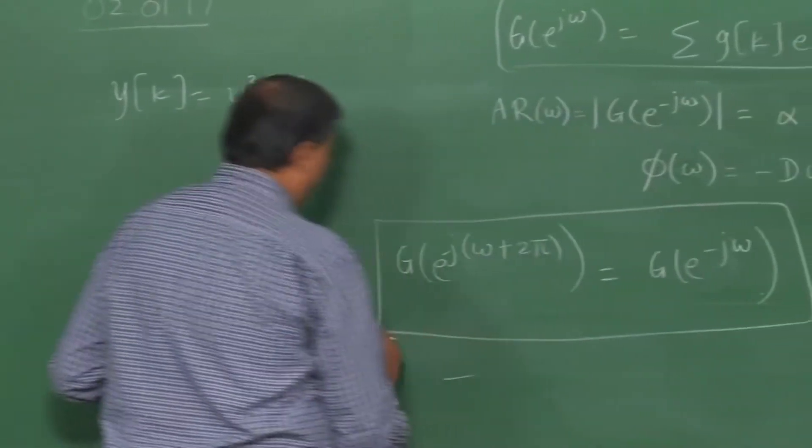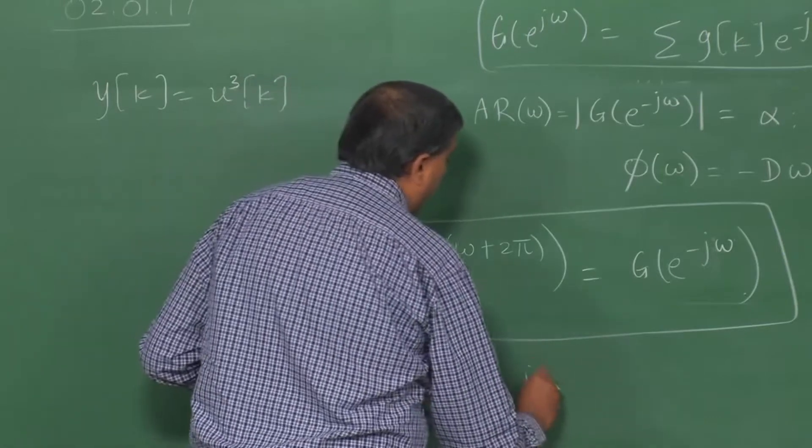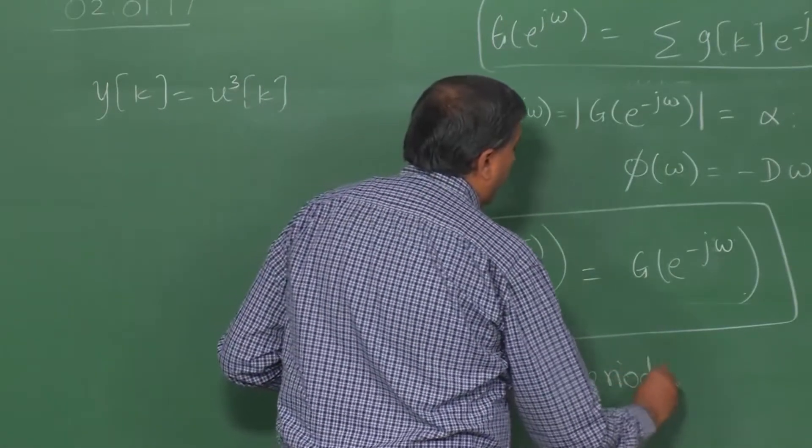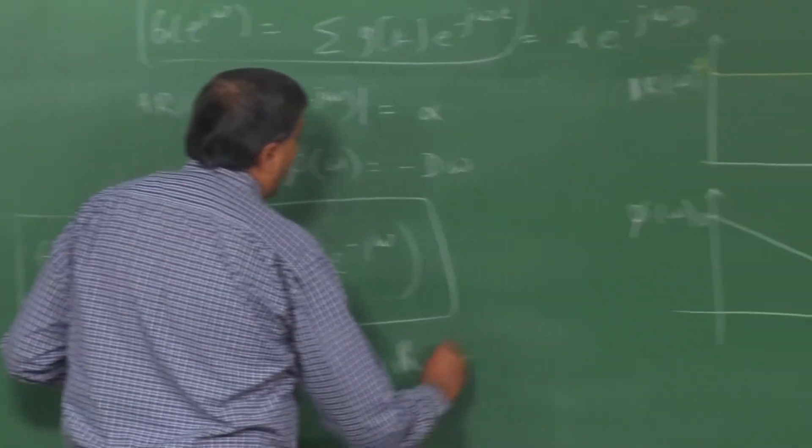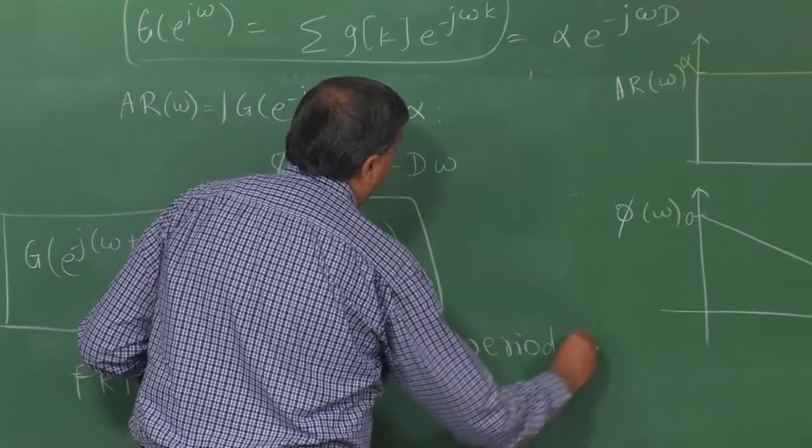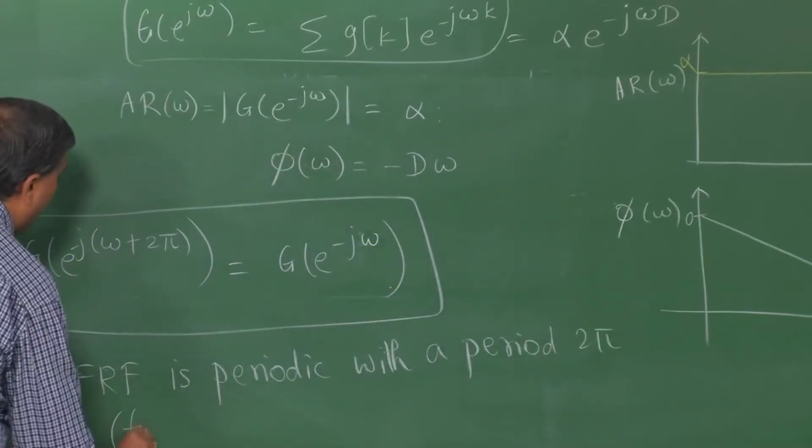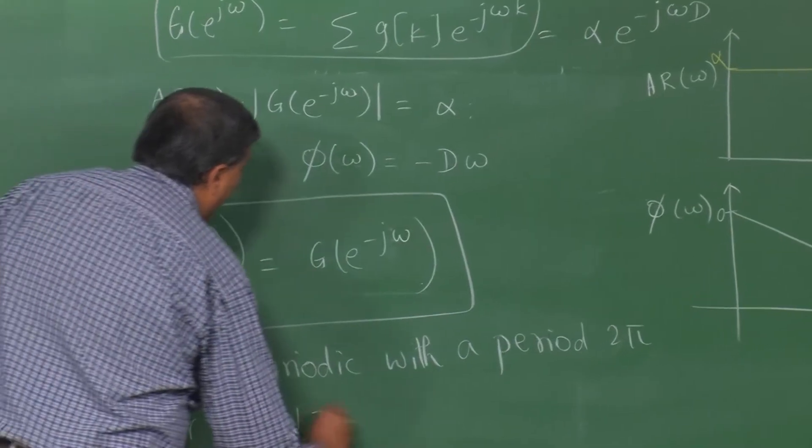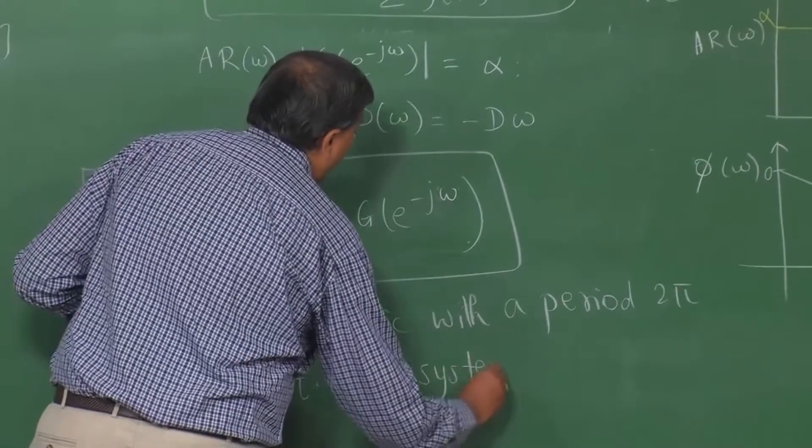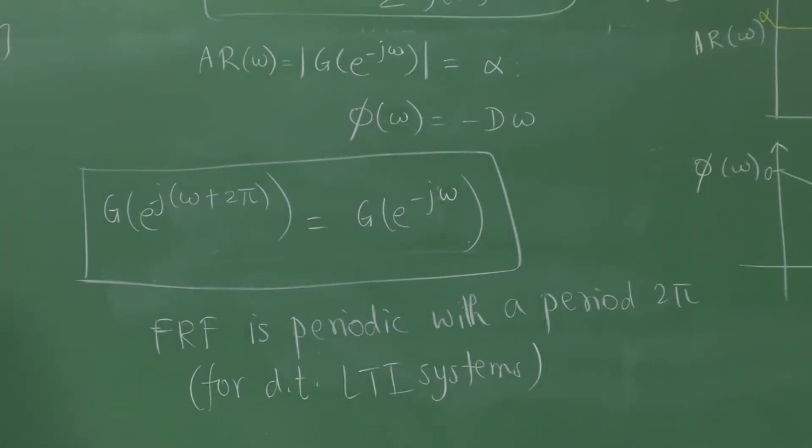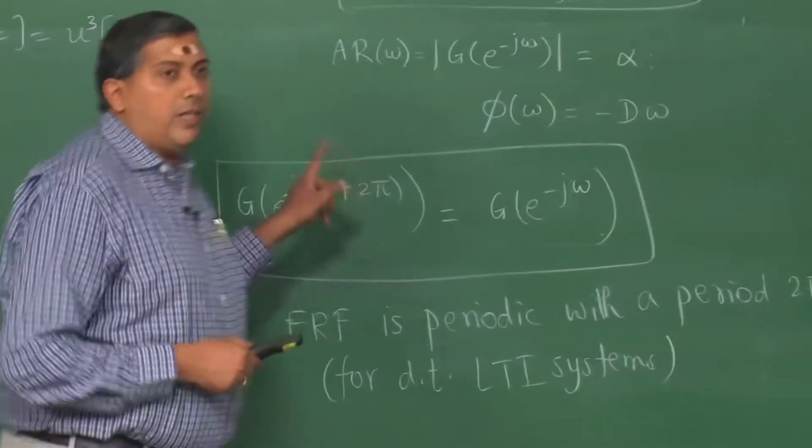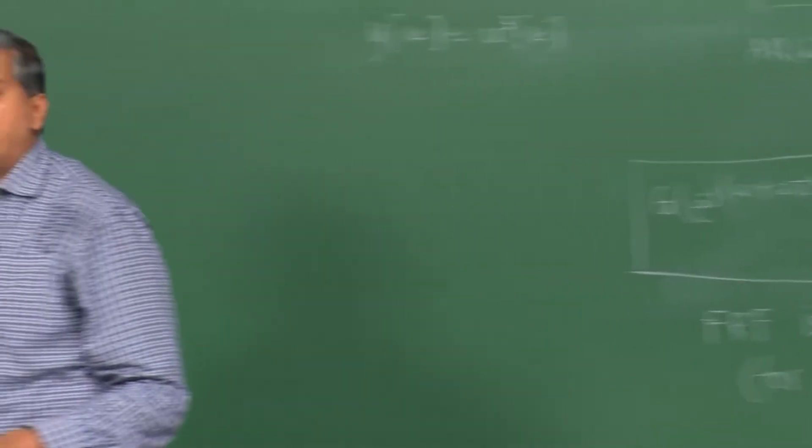We say FRF is periodic for discrete time systems LTI systems only, is periodic with a period 2 pi. Again for discrete time LTI systems, you should remember this fact. Japtak, Suraj, Chandrahe, some things you should remember it forever, alright? Why is this occurring? It is occurring because of the nature of the complex sine waves, e to the minus j omega, itself is periodic with a period 2 pi.